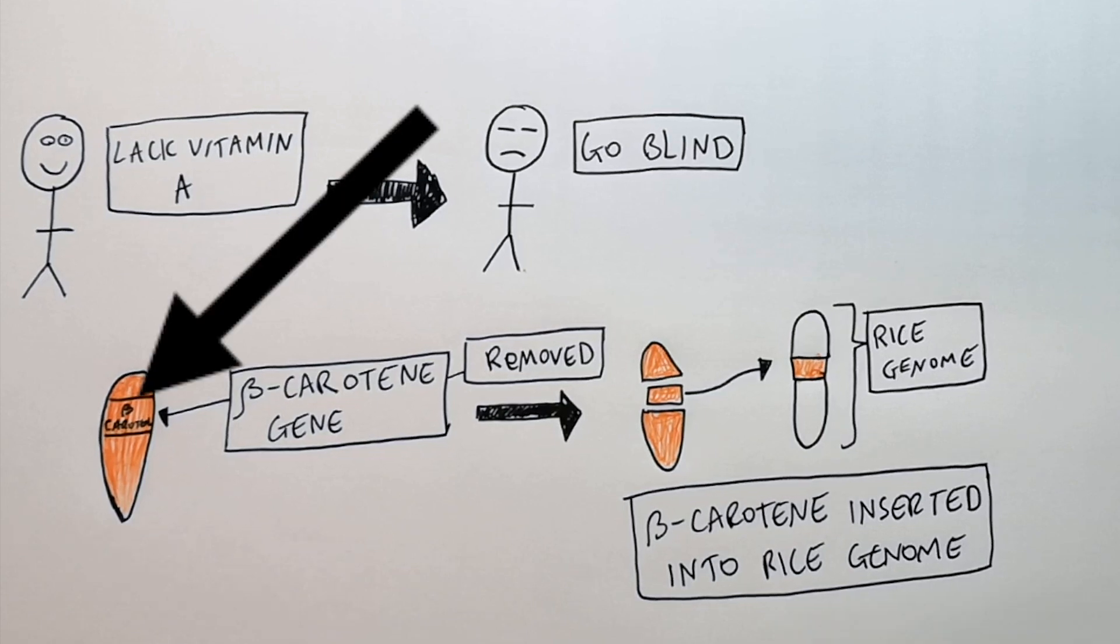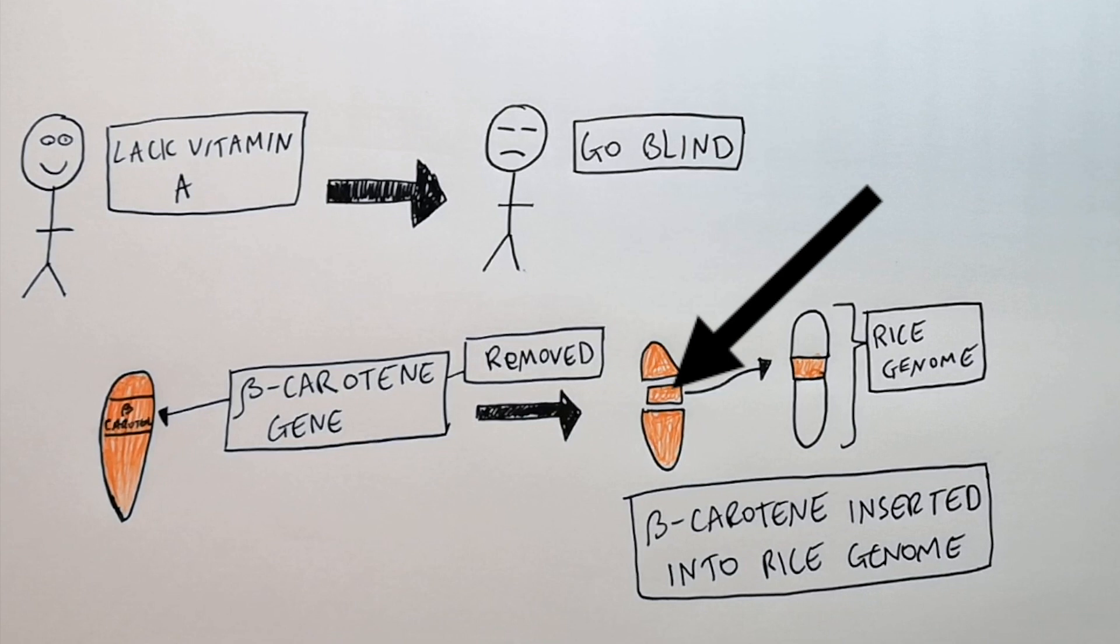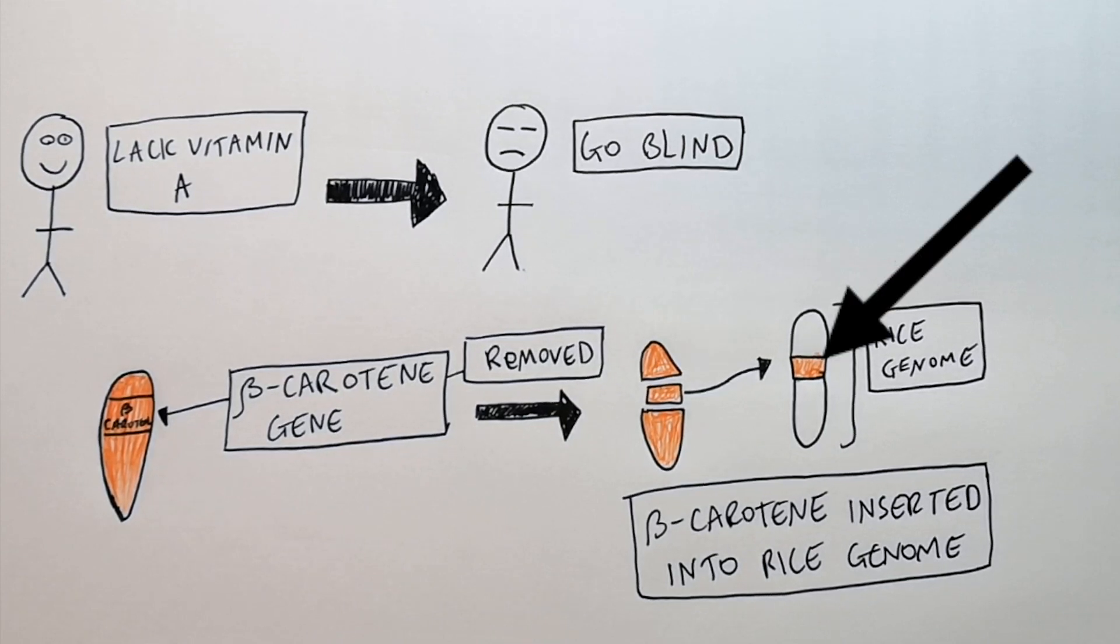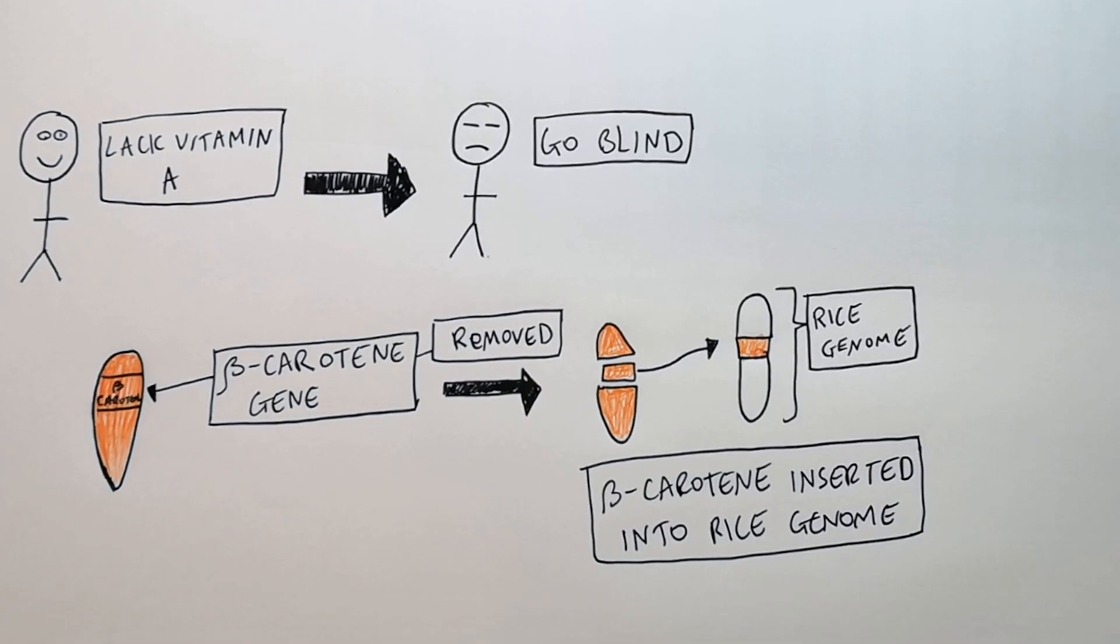Now let's recap. Beta carotene gene is removed from the wheat or the carrot. It is removed. It is then inserted into the genome of rice.